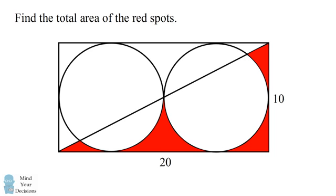The diagram involves a rectangle with dimensions 10 and 20. The rectangle has one of its diagonals connected. Inside the rectangle are two circles of equal size, which are tangent to each other and tangent to the rectangle.